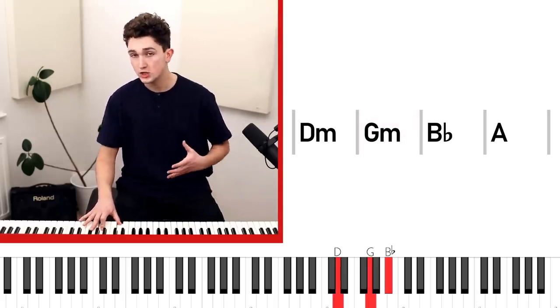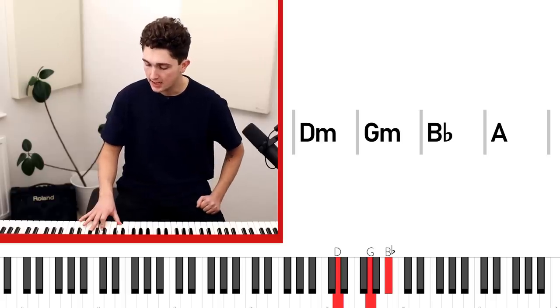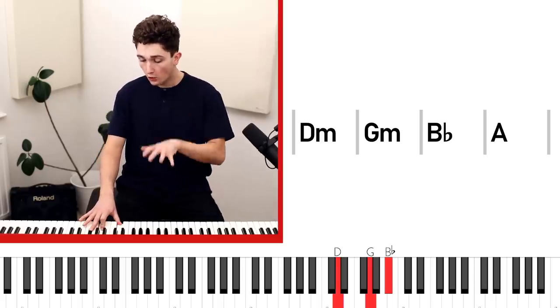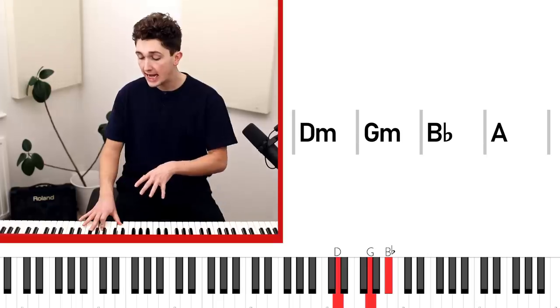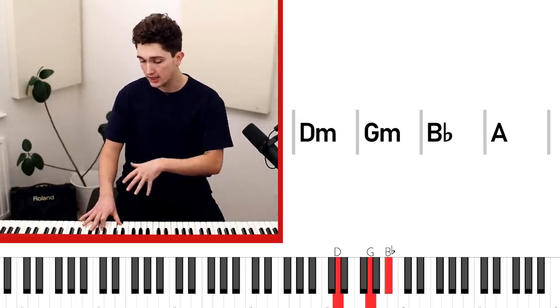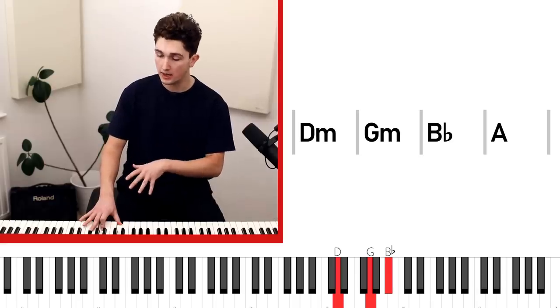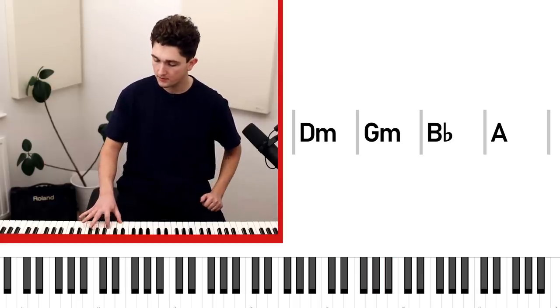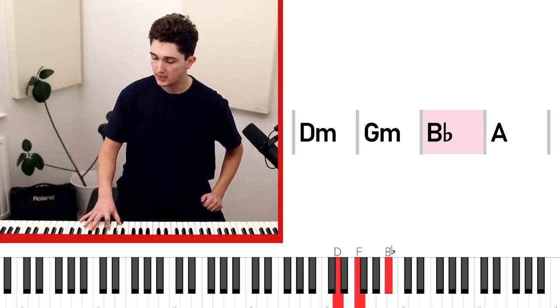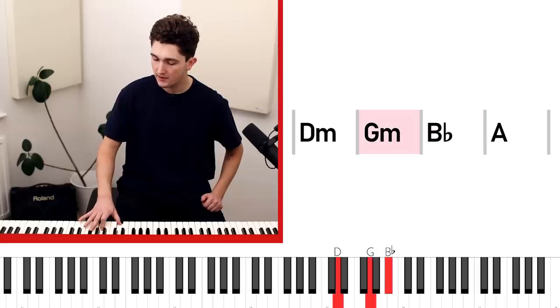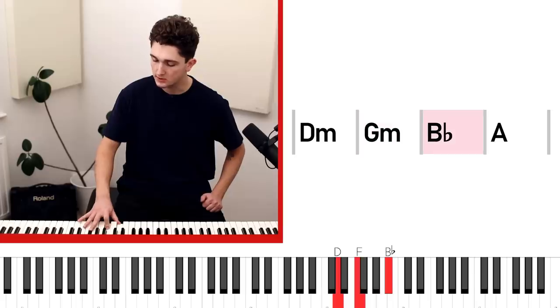Then the next chord in the progression is B flat. Now this is an instance where the chord we're on right now, G minor, actually has two notes in common with the next chord. The only note that's different between G minor and B flat is F. G minor has a G, B flat has an F. So we literally only have to move that central note to switch between the two.